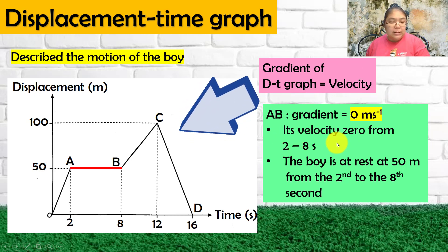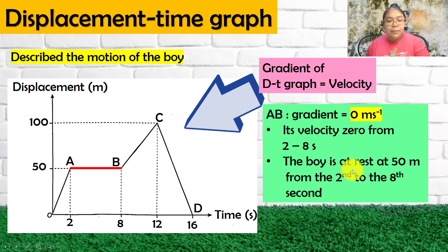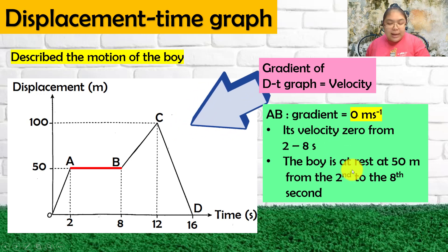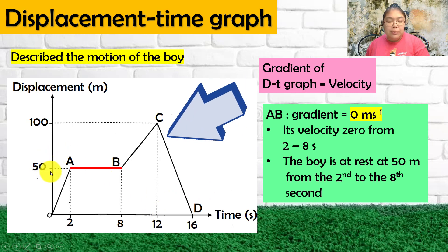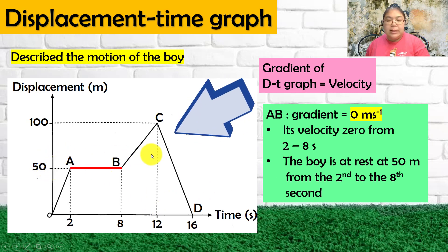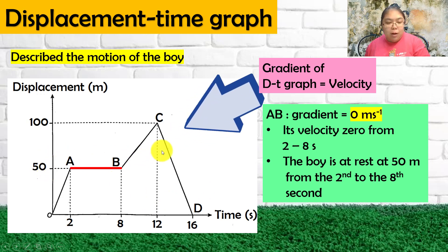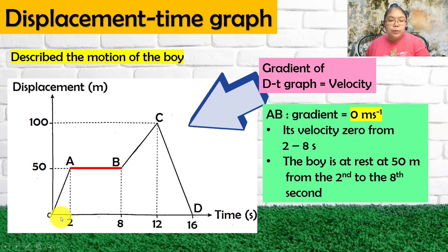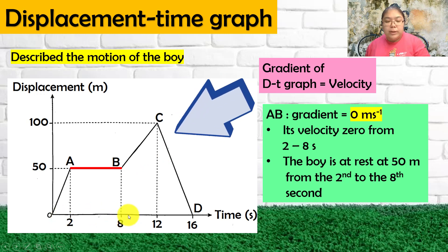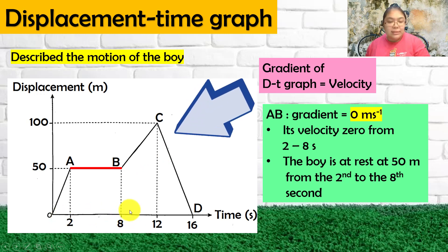The boy is at rest — he walked until 50 meters, then stopped. He rests from 2 seconds to 8 seconds, which means the boy rests for 6 seconds.